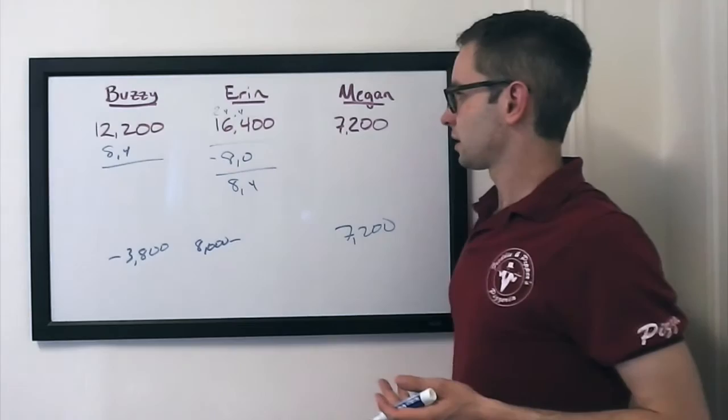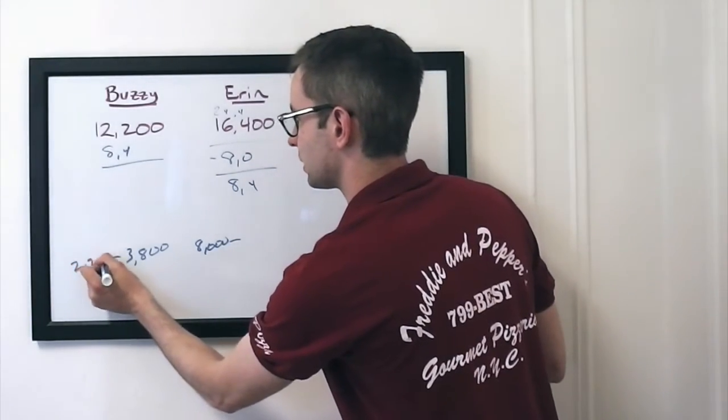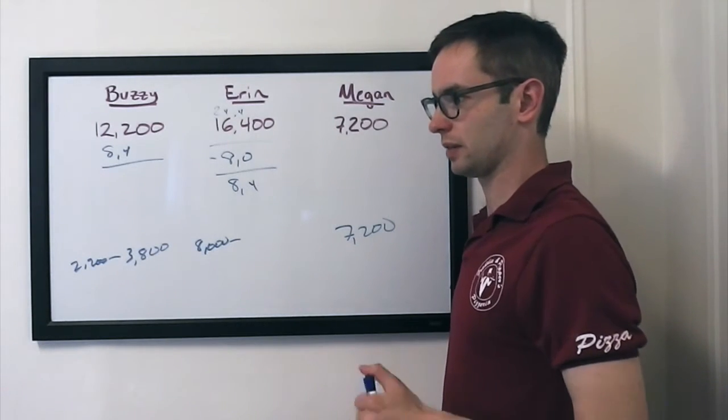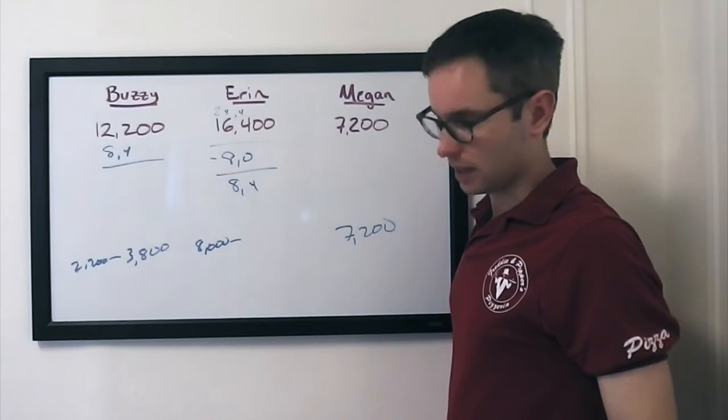So for Buzzy to cover Megan, Megan's got 1,440. That's going to be at least 2,200. But now we get to the mind games, and we have not had mind games in a long time.